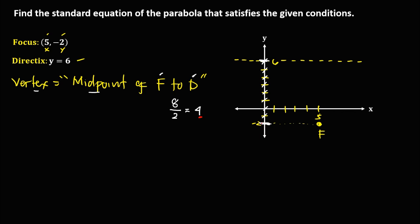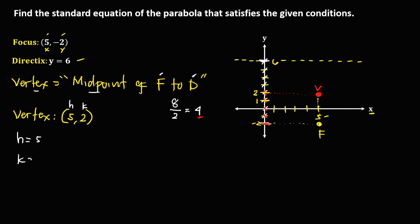Since the vertex is the midpoint, we divide 8 by 2 to get 4. Counting 4 from the focus gives us the vertex. The coordinate of the vertex: x is equal to 5 and y is equal to 2. So h is equal to 5 and k is equal to 2.